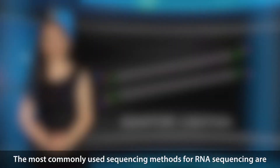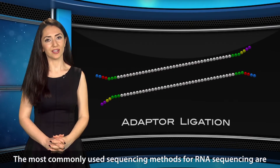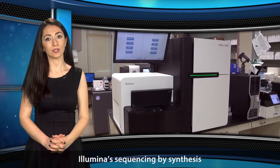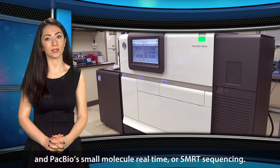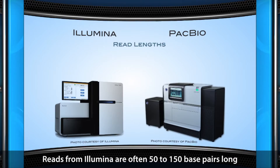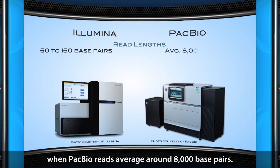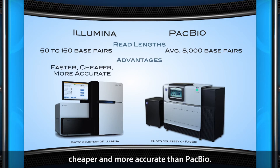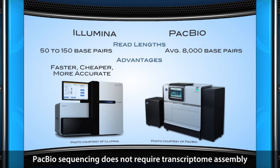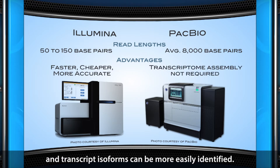The most commonly used sequencing methods for RNA sequencing are Illumina sequencing by synthesis and PacBio's single molecule real-time, or SMRT, sequencing. Reads from Illumina are often 50 to 150 base pairs long, while PacBio reads average around 8,000 base pairs. The main advantage of Illumina is that it is faster, cheaper, and more accurate than PacBio. However, due to the long reads of PacBio, PacBio sequencing doesn't require transcriptome assembly and transcript isoforms can be more easily identified.